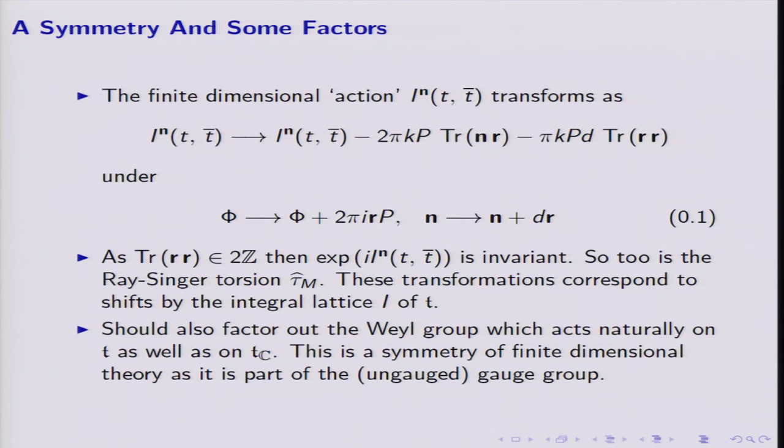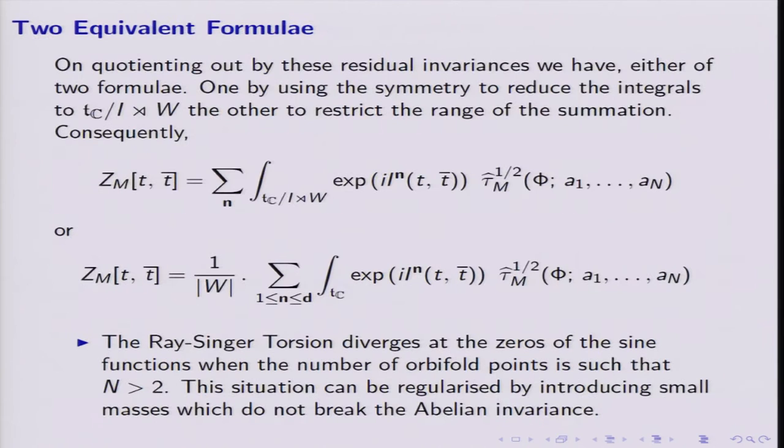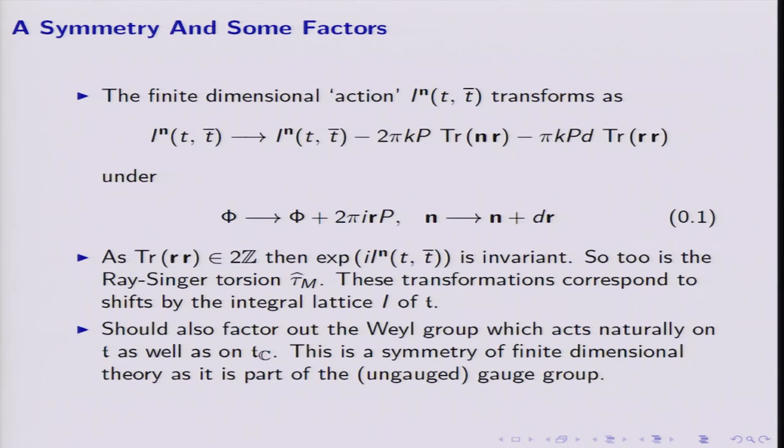There's also the Weyl group. The Weyl group acts naturally on the Cartan sub-algebra as well as on its complexified friend. And so finally there are two equivalent formulae. You can act with those two actions, semi-direct product here, on the field phi. Sorry, if I go back. This also acts on phi. So does the Weyl group. So I can either think that I should quotient phi by the action of combined, sorry, action. Or I can think that I can limit the range of N and then divide out by the Weyl group. And that gives me these two formulas.